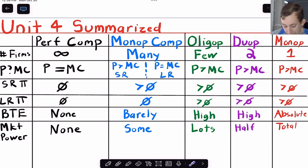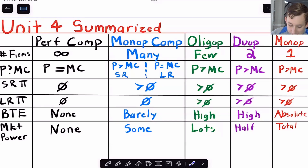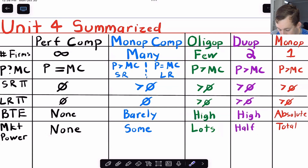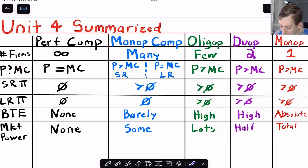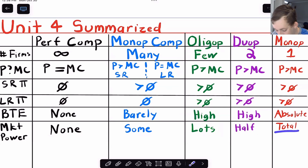Market power is going to be really related to the number of firms and the barriers to entry. In a perfect competition market, we have no market power — firms do not have any power to set prices. And in monopoly, we are going to have total market power because there's only one firm.